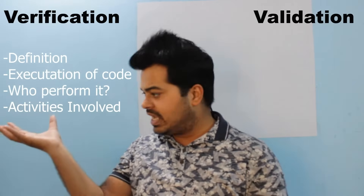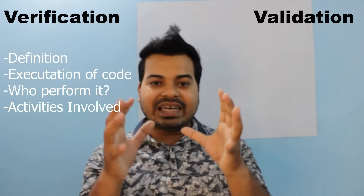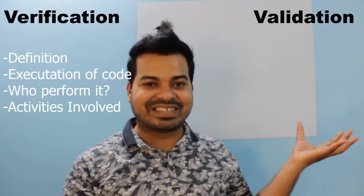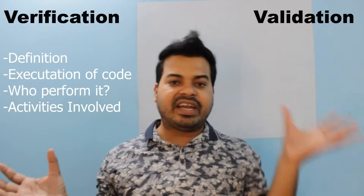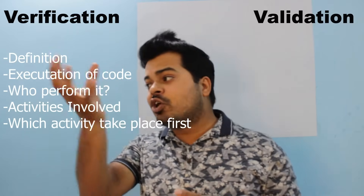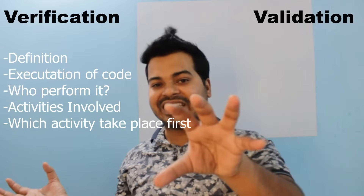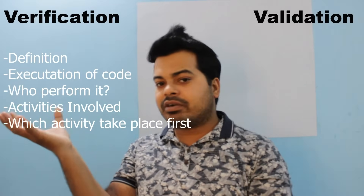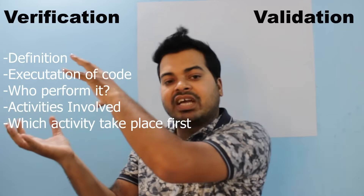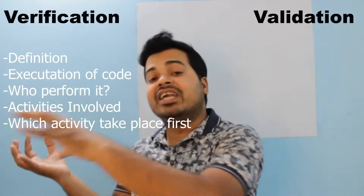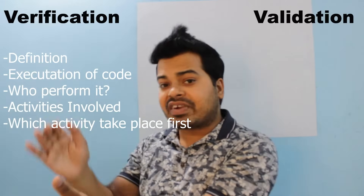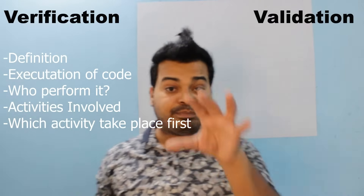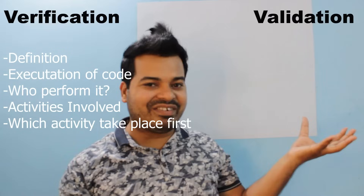These activities take place in verification. The activities that take place in validation are white box testing and black box testing. Out of verification and validation, the first thing that takes place is verification, and the second is validation — because first you verify whether your requirement is correct and whether converting your document to design and then to coding is working perfectly fine. That is verification, so verification takes place before validation.